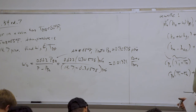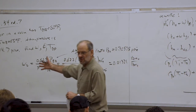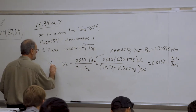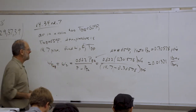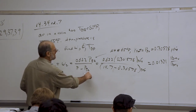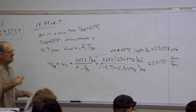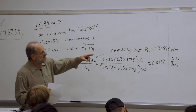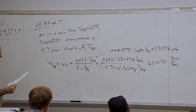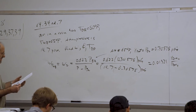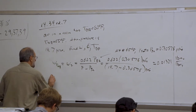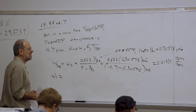Calculating: 0.622 times 0.30578 divided by (14.7 minus 0.30578), where both pressure values are in the same units and cancel. We end up with omega2 equal to 0.01321 pounds mass water vapor per pound mass of dry air.